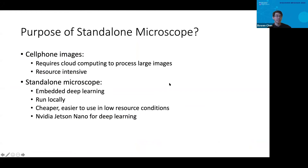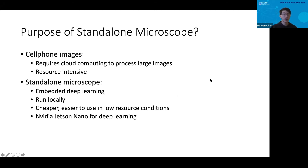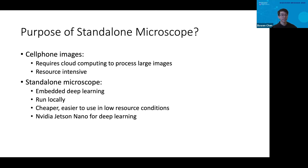The standalone microscope has several advantages over simply taking images with a cell phone. Using a cell phone would require cloud computing to process these large images and run them through the model, which is resource intensive given the constraints in low-resource conditions. But a standalone microscope integrated with embedded deep learning allows us to run the model locally, which is cheaper and easier to use. We ported our model on an NVIDIA Jetson Nano for deep learning, which is also inexpensive.